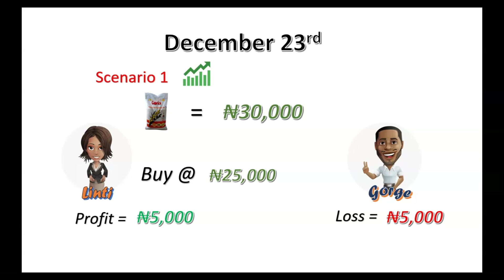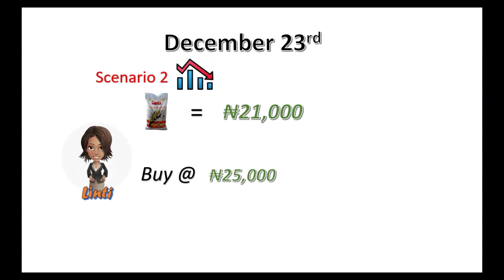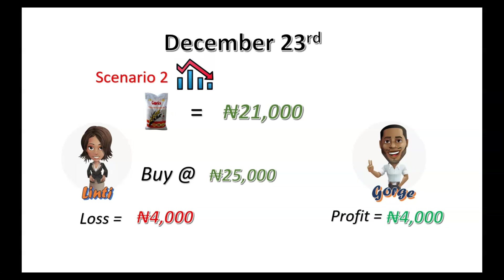George, on the other hand, since he bought the rice at 30,000 and sold it for 25,000, he is losing 5,000 naira. In scenario two, rice is at 21,000. Lindsey still goes ahead and buys the rice at 25,000 because that is what's in the contract. If she needs money she can sell it immediately at the market price of 21,000, making a loss of 4,000 naira — and George is making a profit of 4,000 naira. This is futures trading.